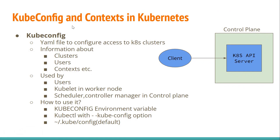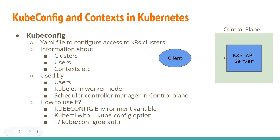Once we have the kubeconfig, how do we access the cluster? We can have a KUBECONFIG environment variable which points to the location of this kubeconfig file, and then kubectl commands will access information from it. If you don't provide the environment variable, we can provide a --kubeconfig option with the kubectl command. If neither is provided, it will search for the configuration file under the home/.kube directory by default.